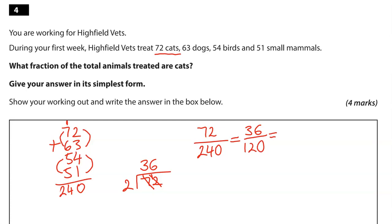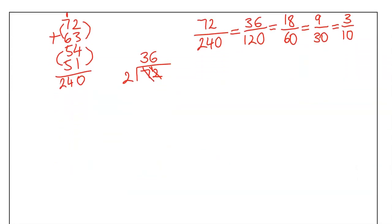We can keep going. We can still divide by 2. Let's give this a go. So 36 divided by 2 is 18. 120 divided by 2, that is 60. Now, 18 and 60, we can still divide by 2 if we want. So that is going to be 9, and that is going to be 30. Now, we can divide by 3. 9 divided by 3 gives us 3. 30 divided by 3 gives us 10. Can we go any further? 3 can only be divided by 1 and 3. So if I divide 3 by 3, it's going to give me 1, but I can't divide 10 by 3 to give me a whole number as the answer. So we're going to go with 3 tenths.